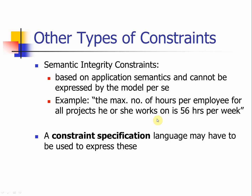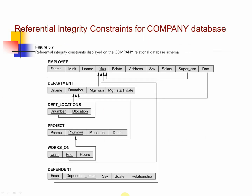The last constraint is the semantic integrity constraint, which is based on application semantics and cannot be expressed by the model itself — for example, the maximum number of hours a person can work. This will not appear on the relational schema diagram. However, when writing code to create a database, you will be able to specify these constraints. Once we have this relational schema diagram, we are very close to translating each piece of information into Oracle data definition language to actually create the database.